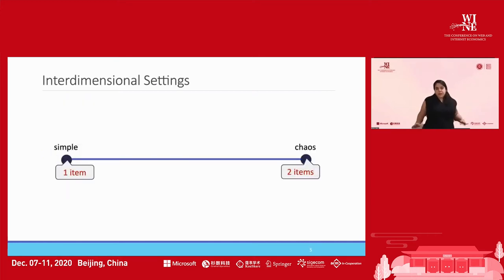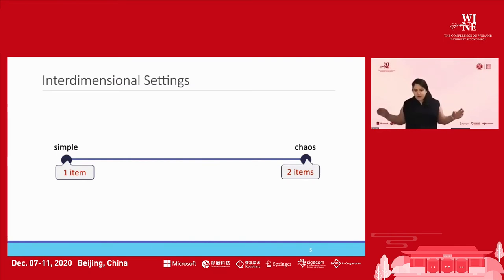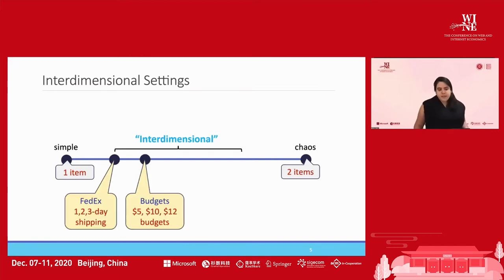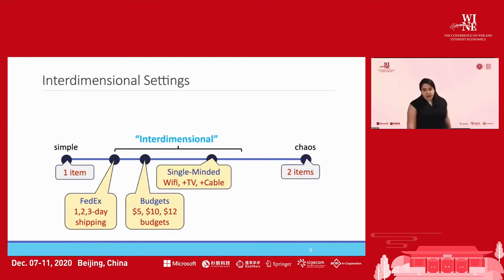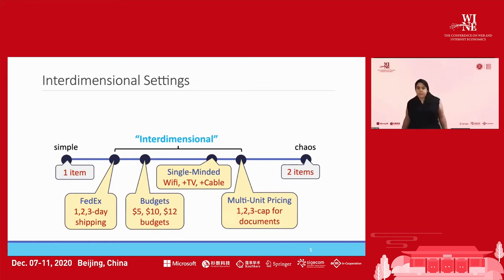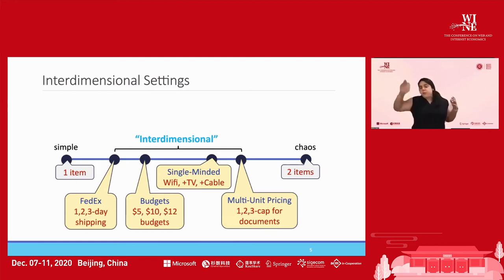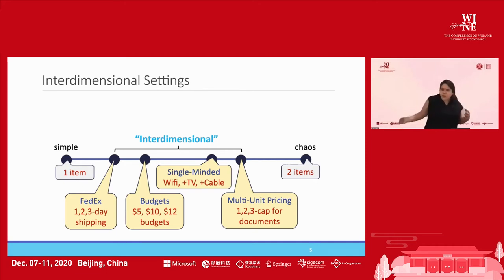There is a new line of work on interdimensional settings that sit between one item and two items, including the FedEx problem and budgets, which I'll return to later. Today I want to talk about the single-minded setting and the multi-unit pricing setting, which are multi-dimensional but more structured than the general two-item case.